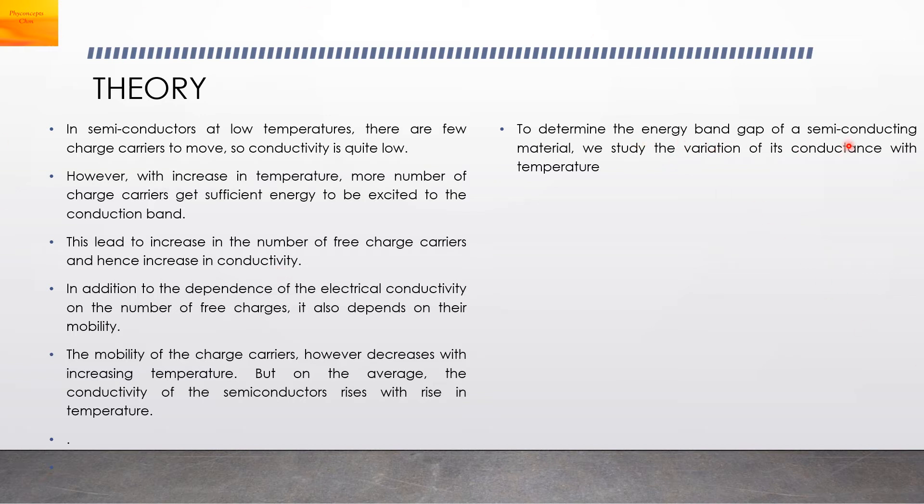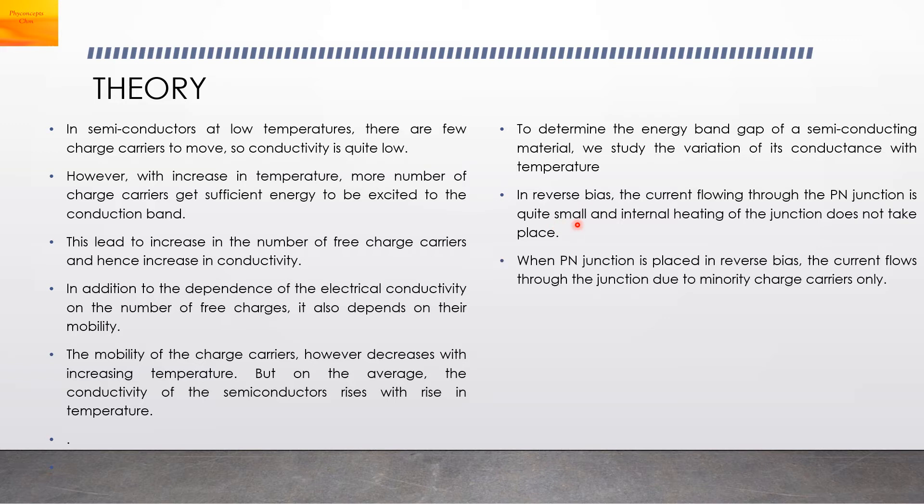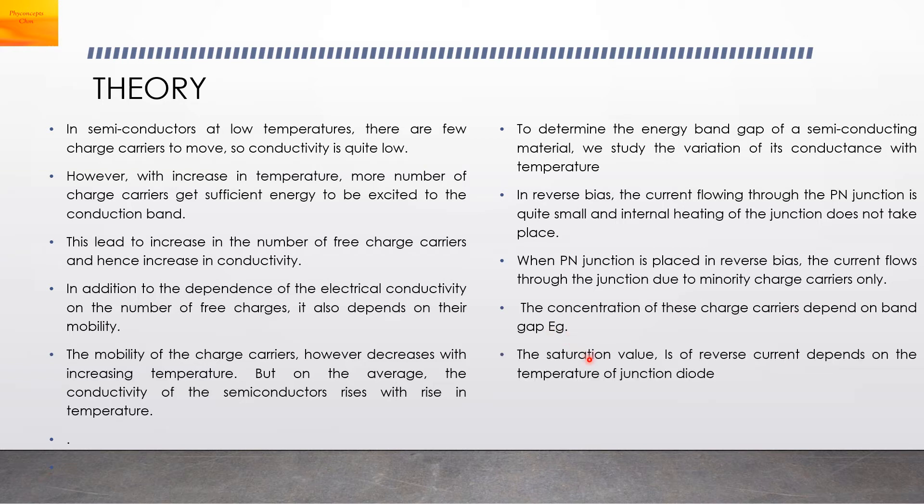To determine the energy band gap of a semiconducting material, we study the variation of its conductance with temperature. In reverse bias, the current flowing through the P-N junction is quite small. It is called reverse saturation current, and this current is due to the minority charge carriers. The concentration of these charge carriers depends on the band gap energy, E sub G. The saturation value, I sub S, is the reverse saturation current. It depends on the temperature of the junction diode.